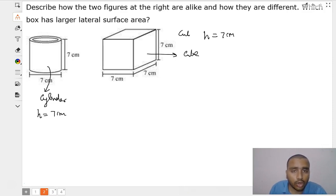So, we can see cube height is also 7 centimeter and cylinder height, let us say H dash, which is equal to 7 centimeter. So therefore, they are alike in the case that they have the same height.